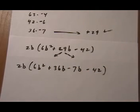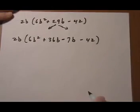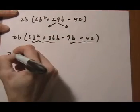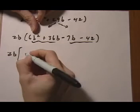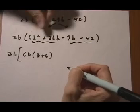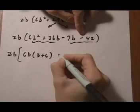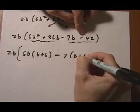And now we can factor by grouping 2 by 2. This 2b tags along. And for the first one the GCF is 6b. And we're left with b plus 6. For the next one to get the correct binomial signs plus and plus we need to pull out a minus sign. GCF of 7. We're left with b plus 6.